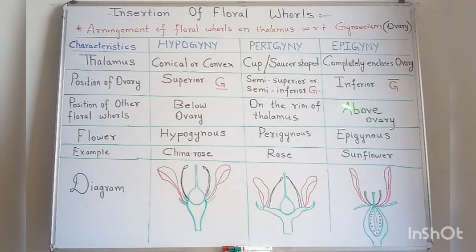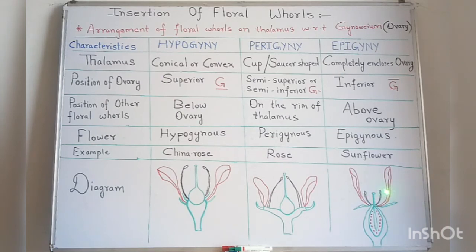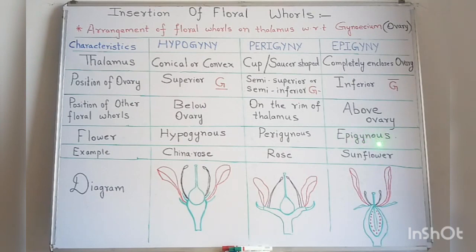The position of the other floral whorls — androecium, calyx, and corolla — is above the ovary. Such a flower in which the ovary is inferior in position and the remaining floral whorls are arranged above the ovary is called an epigynous flower. The example of epigyny is sunflower.